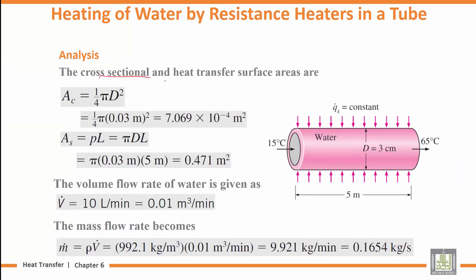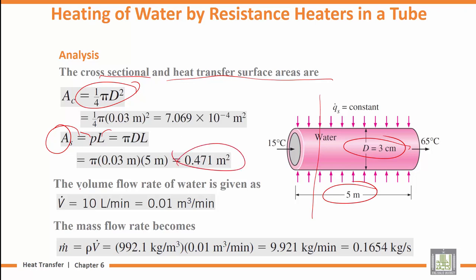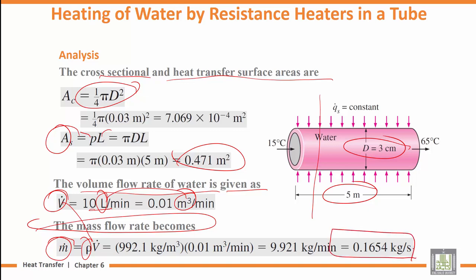The cross-sectional area is one quarter pi D squared. The heat transfer surface area is perimeter times L, the length of the pipe. The volume flow rate of water is given as 10 liters per minute, convert to cubic meters. The mass flow rate is volume flow rate times density, which equals 0.1650 kg per second.